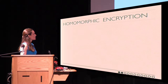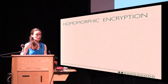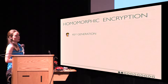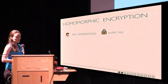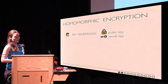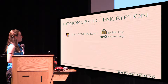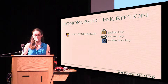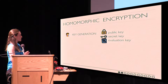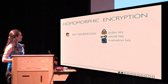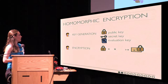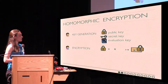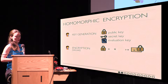A scheme for homomorphic encryption consists of four polynomial time algorithms. The first is key generation: given some security parameter, we generate a public key, a secret key, and also an evaluation key — which is extra information independent of the input that can help during the evaluation phase. Then of course there is the encryption phase, which takes your data X — just classical data in this case — and produces an encryption. This encryption has to be secure for some notion of security.